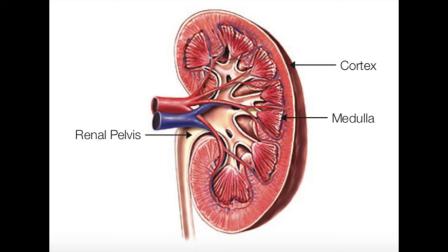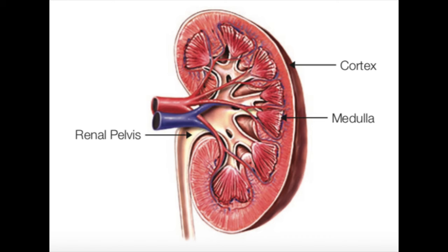The kidney functions using three principles: ultrafiltration, excretion, and reabsorption. The kidney consists of three parts: the cortex, medulla, and the renal pelvis. The cortex, the outer layer, contains 80% of the nephrons. These nephrons filter the blood continuously to maintain balance.